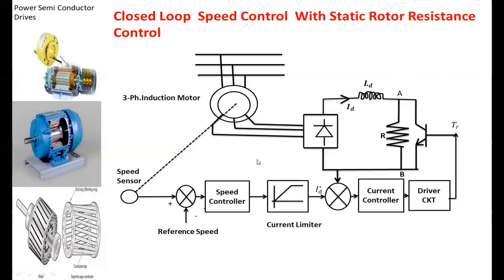This method can be applied only to the slip-ring induction motor; it cannot be applied to the squirrel cage induction motor because it does not have any provision to access the rotor terminals. Suppose we set some reference speed and the actual speed is less than the reference speed — the error in speed becomes large, the current limiter saturates and sets a maximum value. The driver circuit applies the base voltage to the BJT such that the DC link current equals the reference DC link current, maximum torque is generated, and the motor accelerates. The error in speed decreases, then the current limiter adjusts the reference DC link current so that the actual torque equals the load torque and the motor speed equals the reference speed.